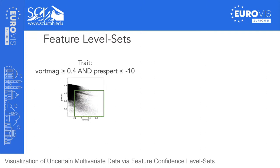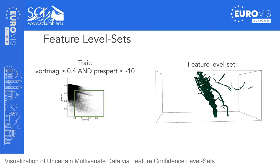Going back to our tornado dataset, we define a trait as vorticity magnitude greater than or equal to 0.4 and pressure perturbation less than or equal to negative 10. This trait is shown using a green rectangular selection in the scatter plot — the two-dimensional attribute space. Comparing the standard approach and a custom transfer function against feature level sets, we are able to isolate the feature defined by the trait. We are visualizing what I'll call the zero level set — the result of extracting a level set from the distance field using a small threshold value.